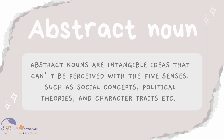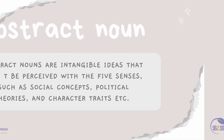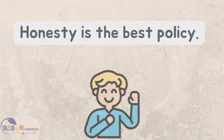The opposite of concrete nouns is abstract nouns. Abstract nouns are intangible ideas that can't be perceived with the five senses, such as social concepts, political theories and character traits. For example, in the sentence 'Honesty is the best policy,' the word honesty is a noun because it is a name of a trait. But we cannot perceive it through our five senses — we cannot touch, smell, taste, see or hear honesty. So the word honesty is an example of an abstract noun.